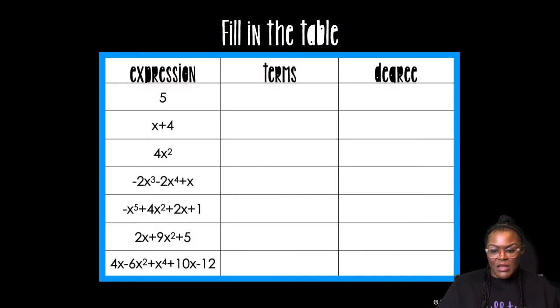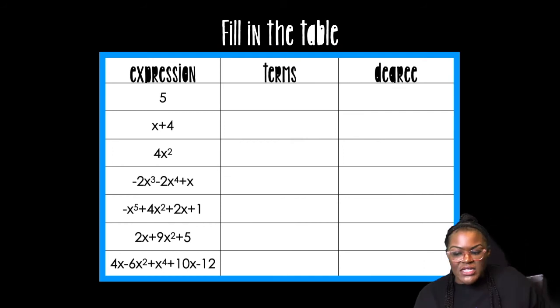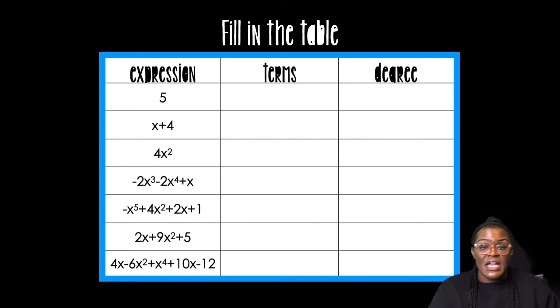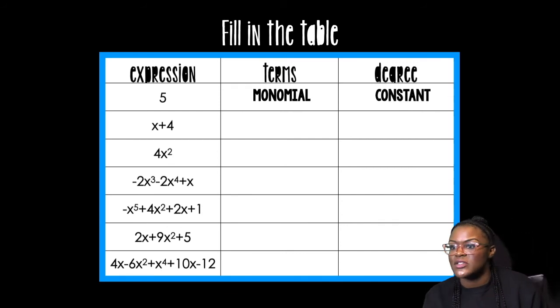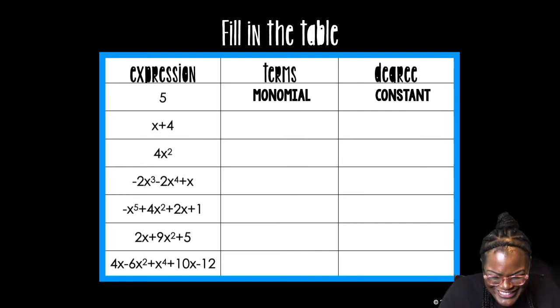So we're gonna fill in the table. So let's say I just have a five. I need to figure out how many terms it is. It's just one term. So I call that a monomial. And what is the degree? Well, there's no variable. So that means that it's zero. So I call that a constant. Oh my gosh, a squirrel. Not in my house. In the window, I was in my house.